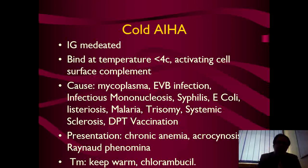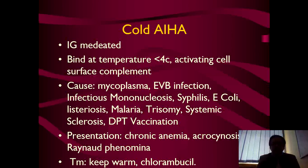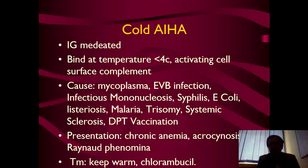The second class is cold autoimmune hemolytic anemia. It is IgG-mediated but hemolysis occurs at low temperature — antibodies bind at 4°C through activation of cell surface complement. Causes include mycoplasma infection, Epstein-Barr virus, infectious mononucleosis, syphilis, E. coli infections, listeriosis, malaria, trisomy, systemic sclerosis, and DPT vaccination. Remember: after DPT vaccination there is a chance of cold autoimmune hemolytic anemia.